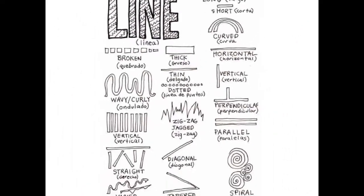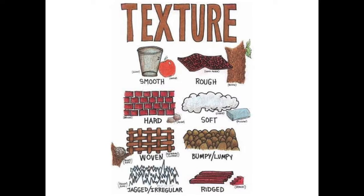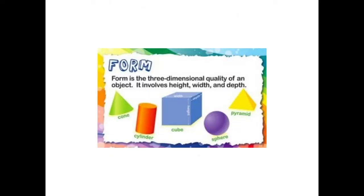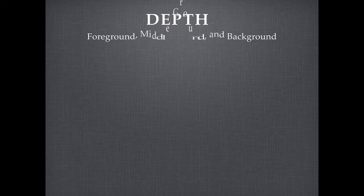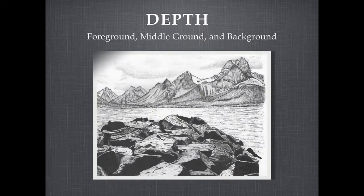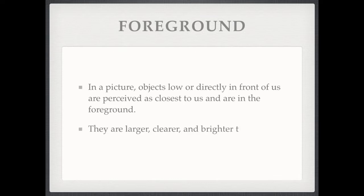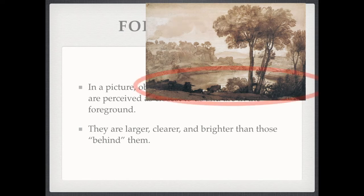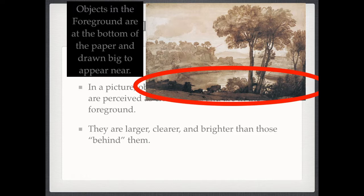We use lines and shapes and combine those together to create texture. This week we'll be adding form — making our shapes look three-dimensional — which will help when creating depth. Objects in a drawing or painting at the bottom are considered to be in the foreground, and these appear to be closest to the viewer.